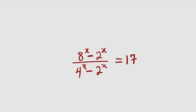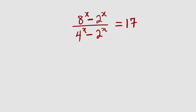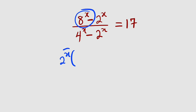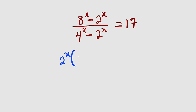Let's get started with the solution. First of all, let us factorize both numerator and denominator. When factoring, always bring the smaller number out. 2 to the power of x is smaller compared to 8 to the power of x, so we have 2 to the power of x outside. Inside, we take this and divide by this: 8 to the power of x divided by 2 to the power of x is 4 to the power of x, minus 2 to the power of x divided by 2 to the power of x, which is 1.